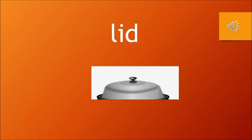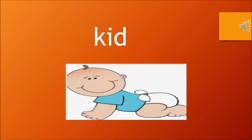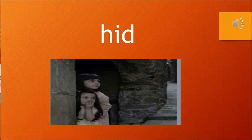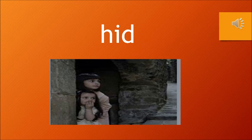Lid is any type of a cover — it could be of any container. The next word: kid. K, id, kid. Kid means a small baby. Now the next word: H and id, hid. Can you see the two children? They are hiding behind the rock. H, id, hid — it means to hide somewhere.